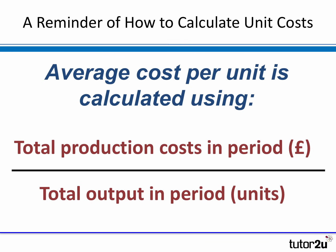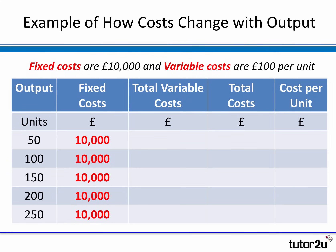So it's total costs divided by total output in units. Let's have a look at how it can happen that cost per unit falls as output increases — where economies of scale are starting to take place. The key point, of course, is that there are two types of costs in a business. Fixed costs do not change in relation to output.